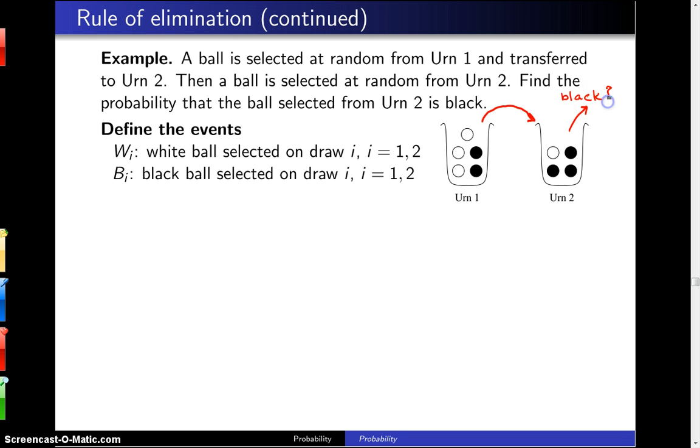So we're trying to determine that probability. The events are already defined. W sub i is a white ball is selected on draw i, i equals 1, 2. B sub i is a black ball selected on draw i, i equals 1, 2.